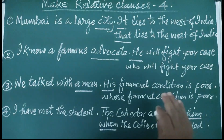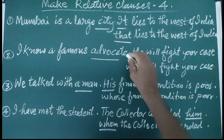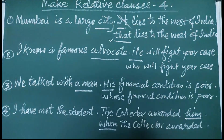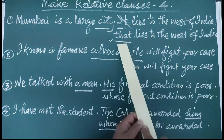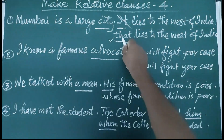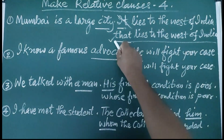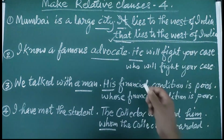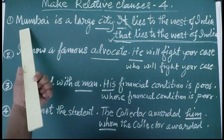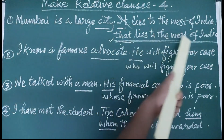Mostly, the second sentence is converted into a relative clause. For that purpose, we will provide a relative pronoun to replace the second word, which is 'it'. So we will delete 'it' and write 'that', because 'it' comes in the category of things. From that category, we can use either 'that' or 'which'. By writing 'that' in place of 'it', we have automatically made the relative clause. Our duty is to add this clause to the main part. So the answer is: Mumbai is a large city that lies to the west of India.